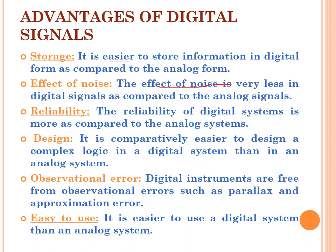Reliability — digital systems are more reliable compared to analog systems. Design — whenever we need to design any complex logic, designing it in digital form is easier in comparison to analog form. Observational error — digital instruments are free from observational errors such as parallax and approximation error. Easy to use — digital systems are easier to use in comparison to analog systems.